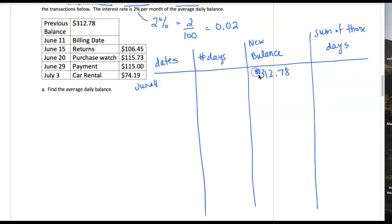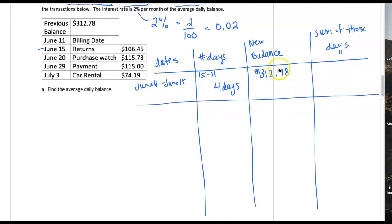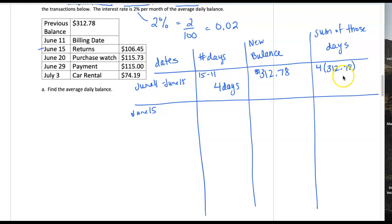We want to figure out how long the balance stays that amount. Our first transaction is on June 15th, so from June 11th to June 15th — which is 15 minus 11 — is four days. We keep the balance of $312.78 for June 11th, 12th, 13th, and 14th. The 15th is when we start the next transaction. For those four days the balance was $312.78, and doing the shortcut of multiplying I get a total of $1,251.12 for those four days. The next row goes from June 15th to the next date, June 20th — five days.